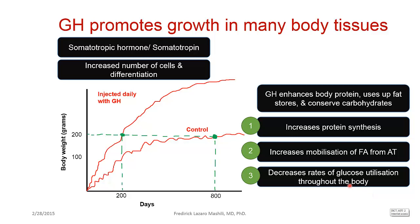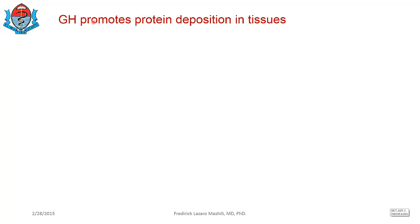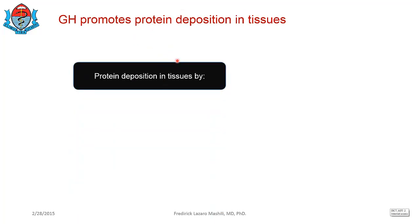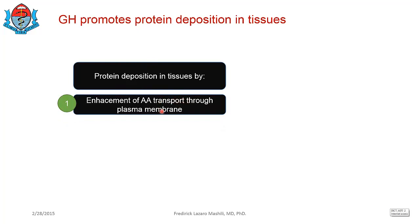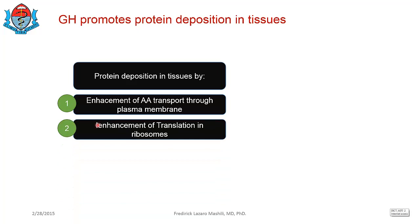One important effect of growth hormone is to promote protein deposition in tissues. This is achieved by: first, enhancement of amino acid transport through the plasma membrane — for protein to be built, amino acids must move into the cells, and this movement is facilitated by growth hormone. Second, enhancement of translation in the ribosome — translation is the process whereby mRNA is translated into a protein, and this is also promoted by growth hormone.